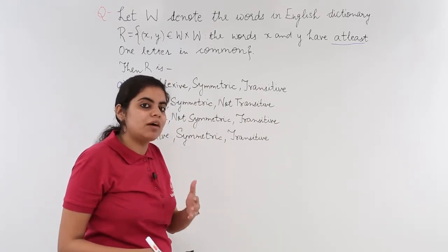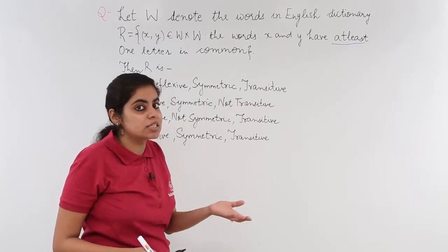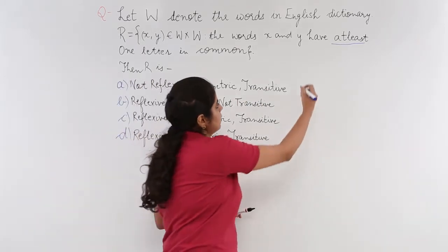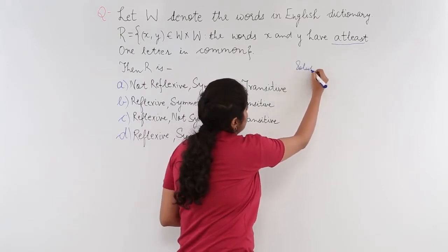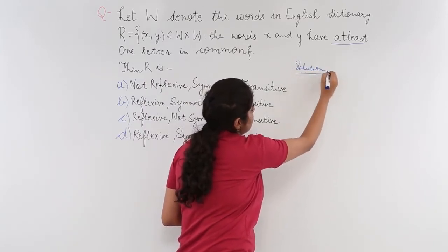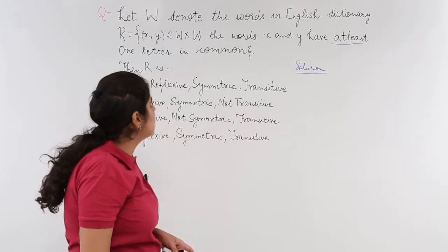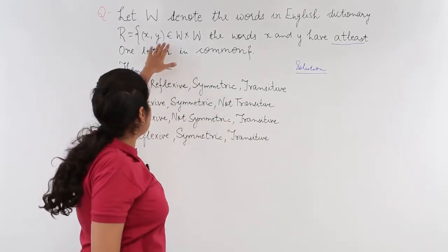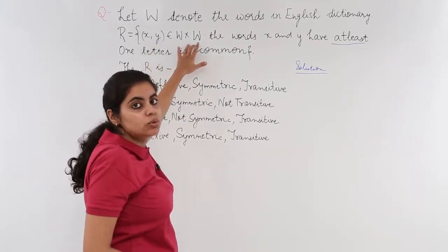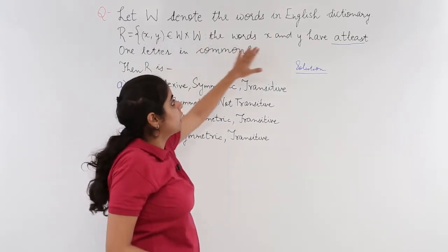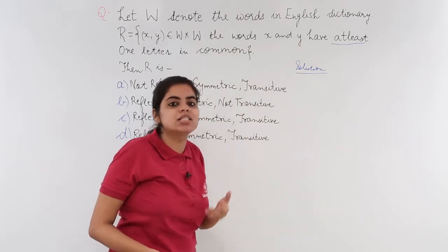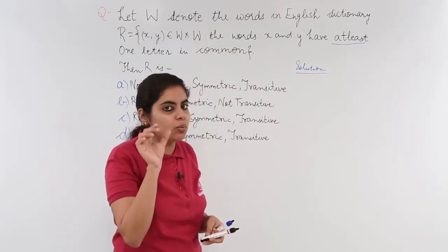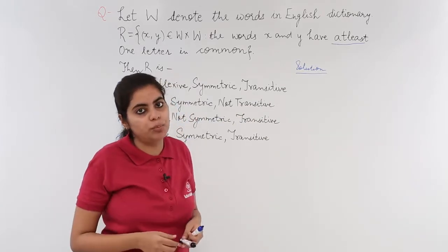One by one we have to check whether it is reflexive, symmetric and transitive. So let's get started. First, I have to check whether it is reflexive. Let's read out the relation again: (x, y) belongs to W×W where x and y have at least one letter in common. 'At least' means either one letter or more than one letter can be in common.